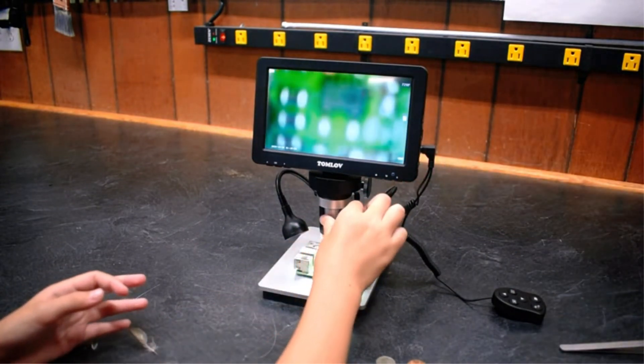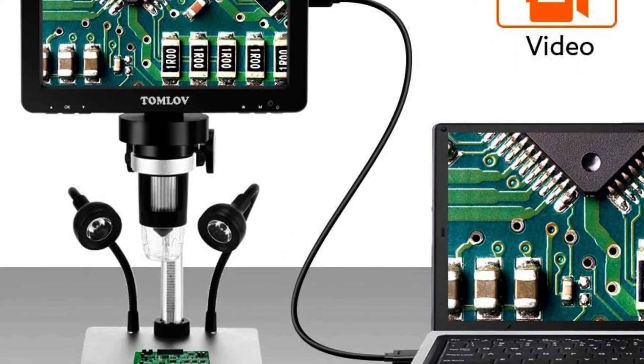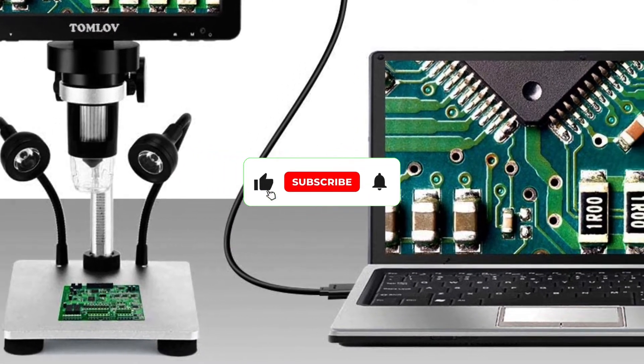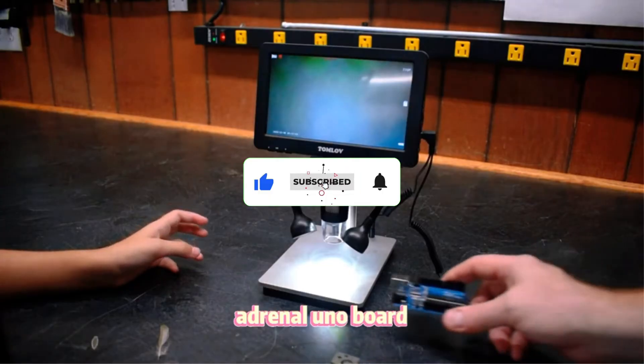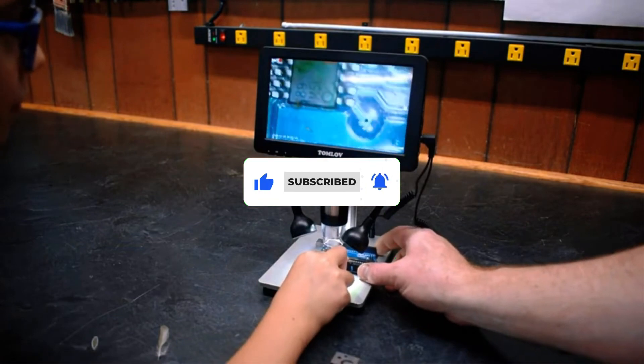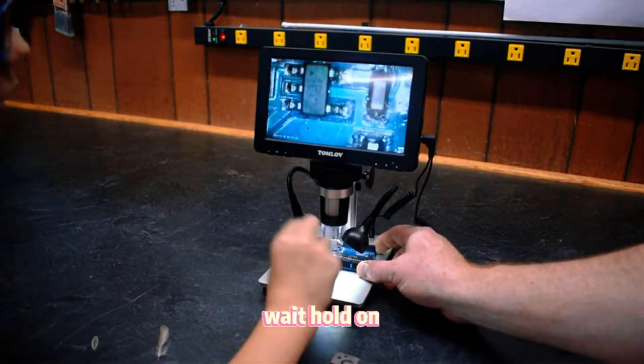You also get a pretty high zoom rating of 1200x with this microscope for seeing all the details. If you want to take photos and videos, then you can store those on the included 32GB SD card.